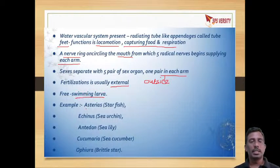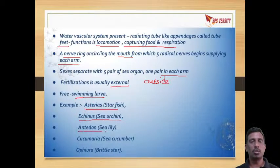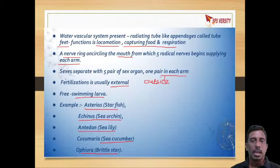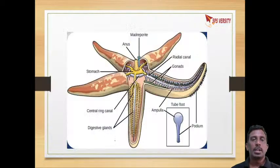Examples of Echinodermata are: Asterias (starfish), Echinus (sea urchin), Antedon (sea lily), sea cucumber, Ophiura (brittle star), and Epoora.